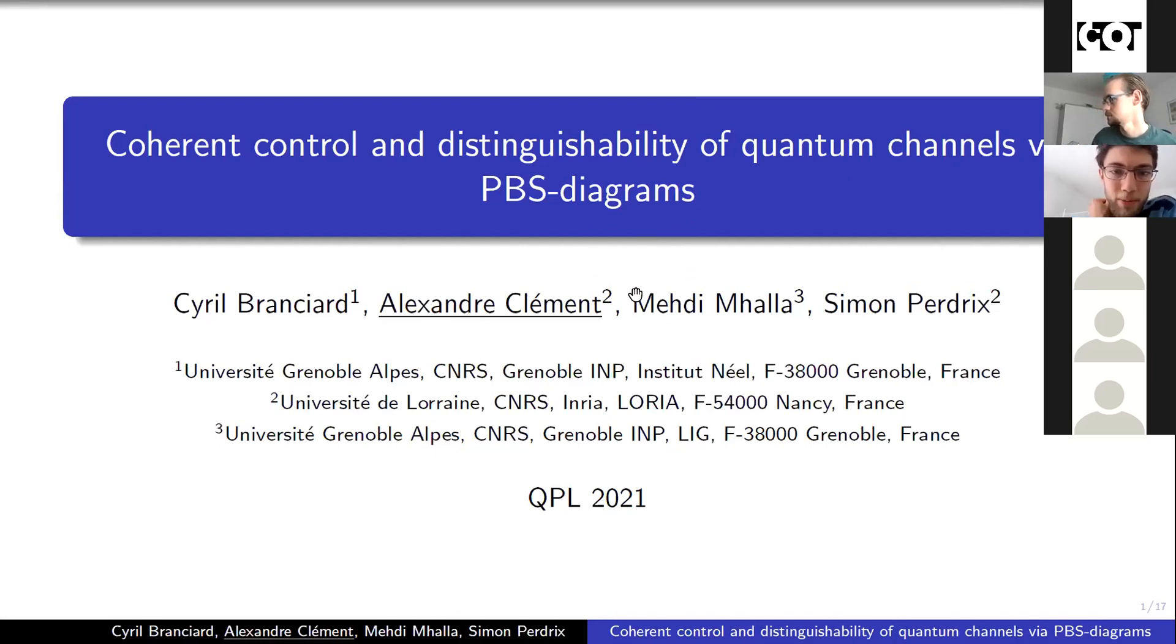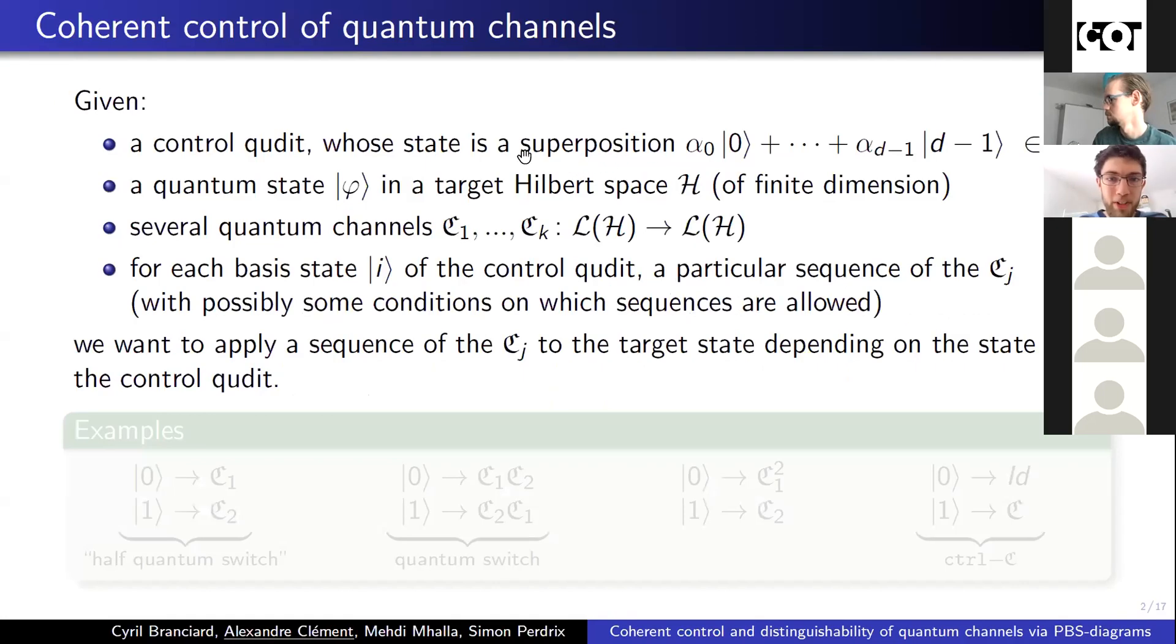So I'm from the same place as it is. I'm going to talk about quantum channels and what we can say about their distinguishability. The framework is that we have a control qudit, a quantum state in which we can apply several quantum channels. For each basis state, we have chosen a particular sequence that we want to apply possibly in a superposition.